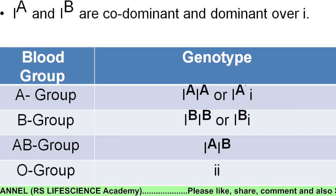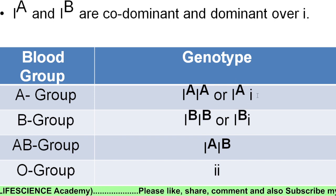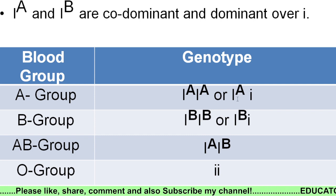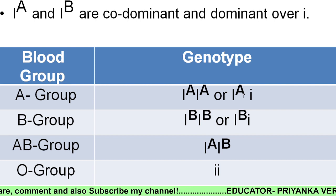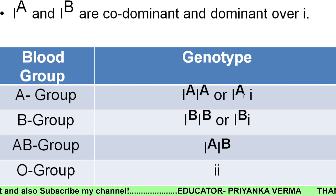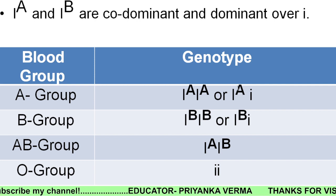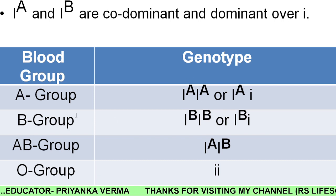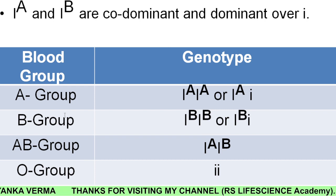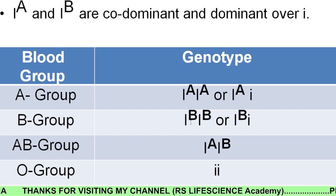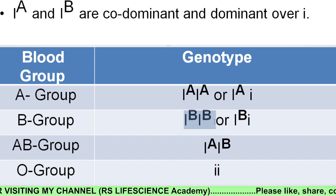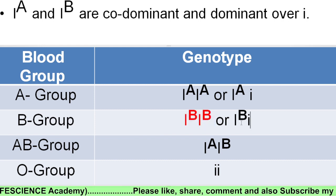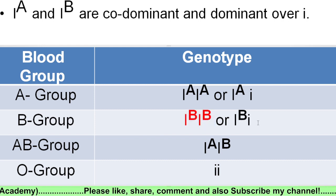If Iᴬ is present, it will be expressed. If someone's blood group is A, the possible genotypes are IᴬIᴬ or Iᴬi. If someone's blood group is B, the possible genotypes are IᴮIᴮ or Iᴮi. These two genotypes are possible for blood group B.